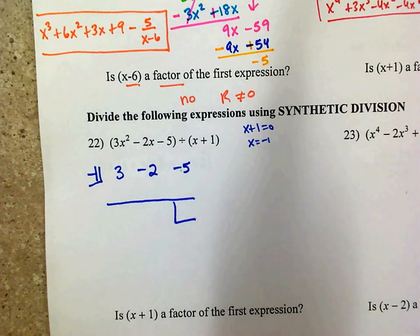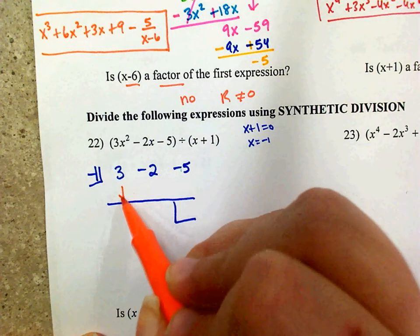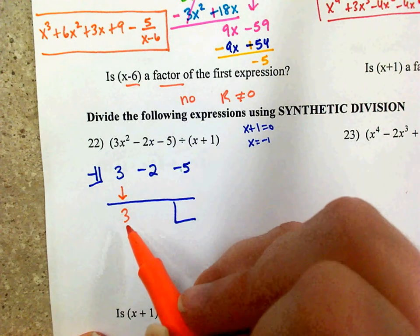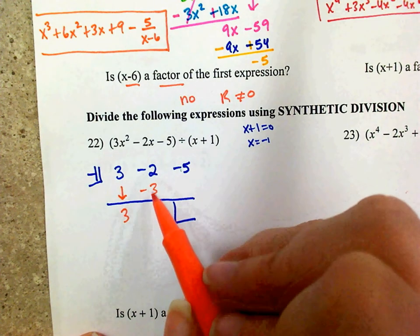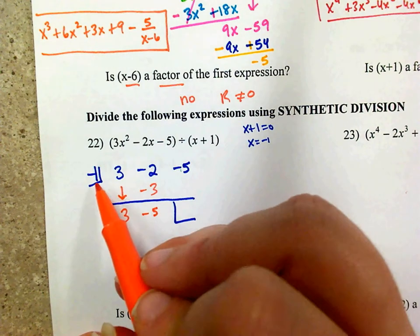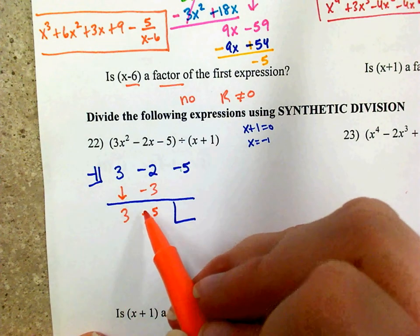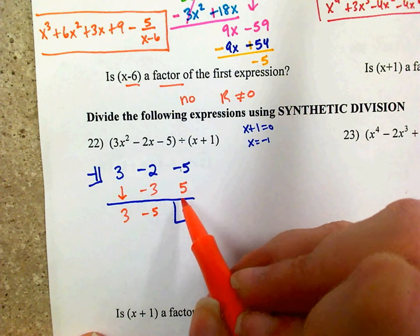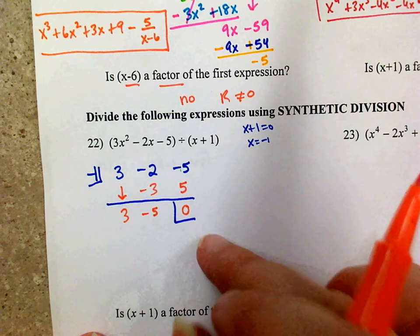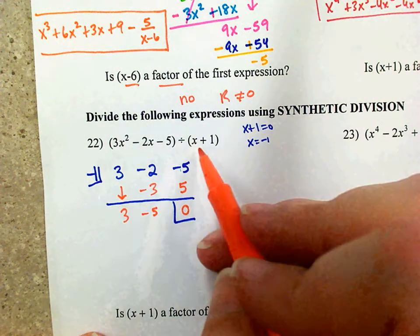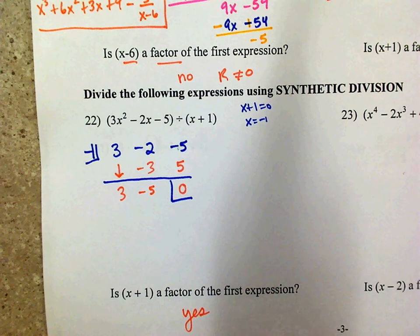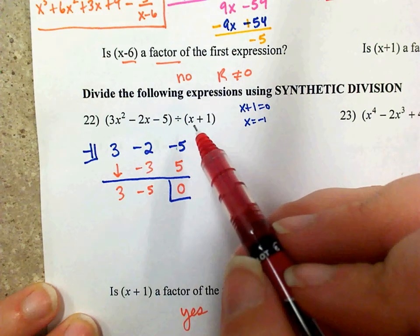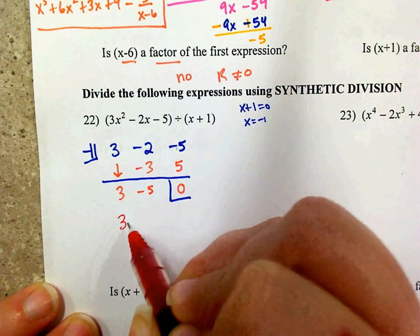Bring down the 3 and multiply. Negative 1 times 3 is negative 3. Add: negative 2 plus negative 3 is negative 5. Multiply again: negative 1 times negative 5 is positive 5. Add vertically: negative 5 plus 5 is 0. My remainder is 0, which tells me that is a factor of the quadratic. The answer: you started with the power of 2 and divided out 1, so you end with power of 1 — 3x minus 5.